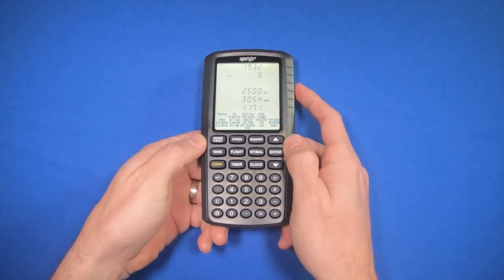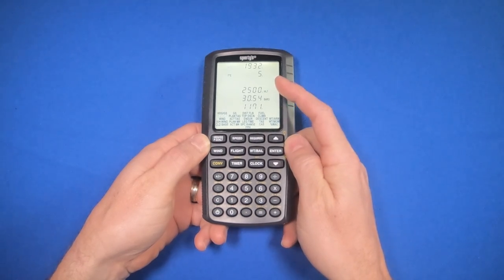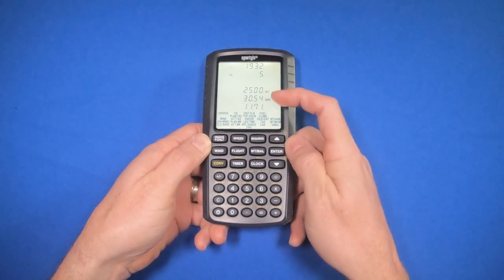Then we'll do the calculation. You notice that the density and pressure altitude is lower than the indicated altitude. This makes sense as it's cold and high pressure.